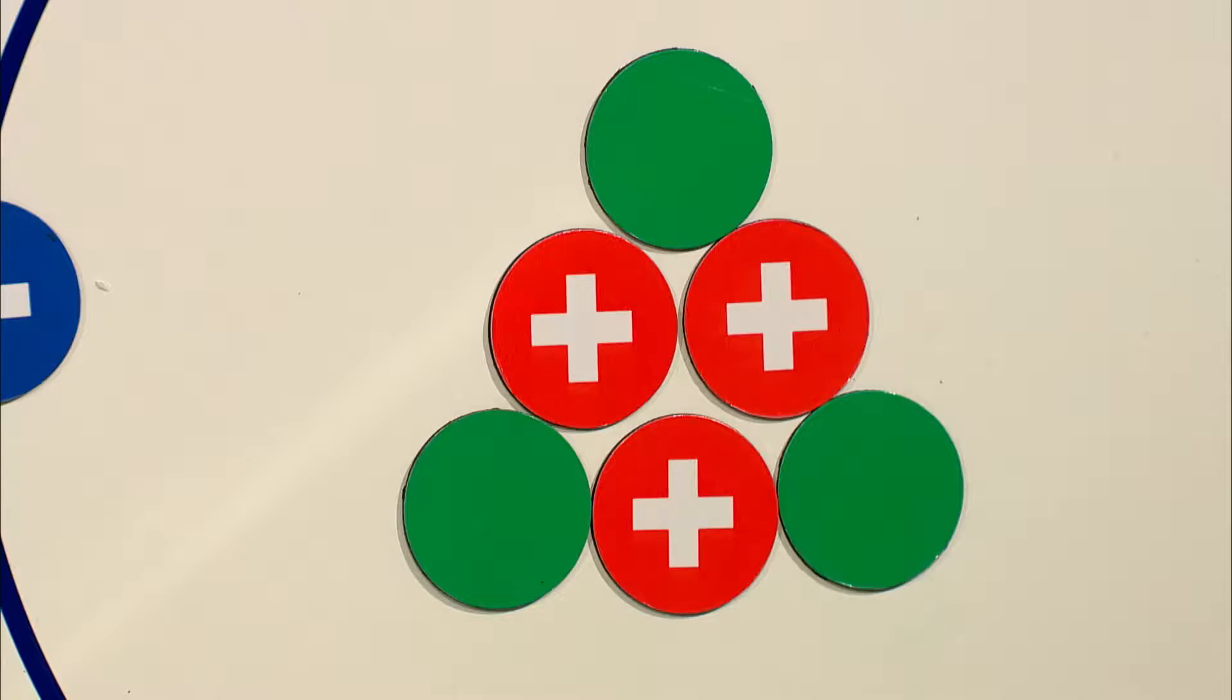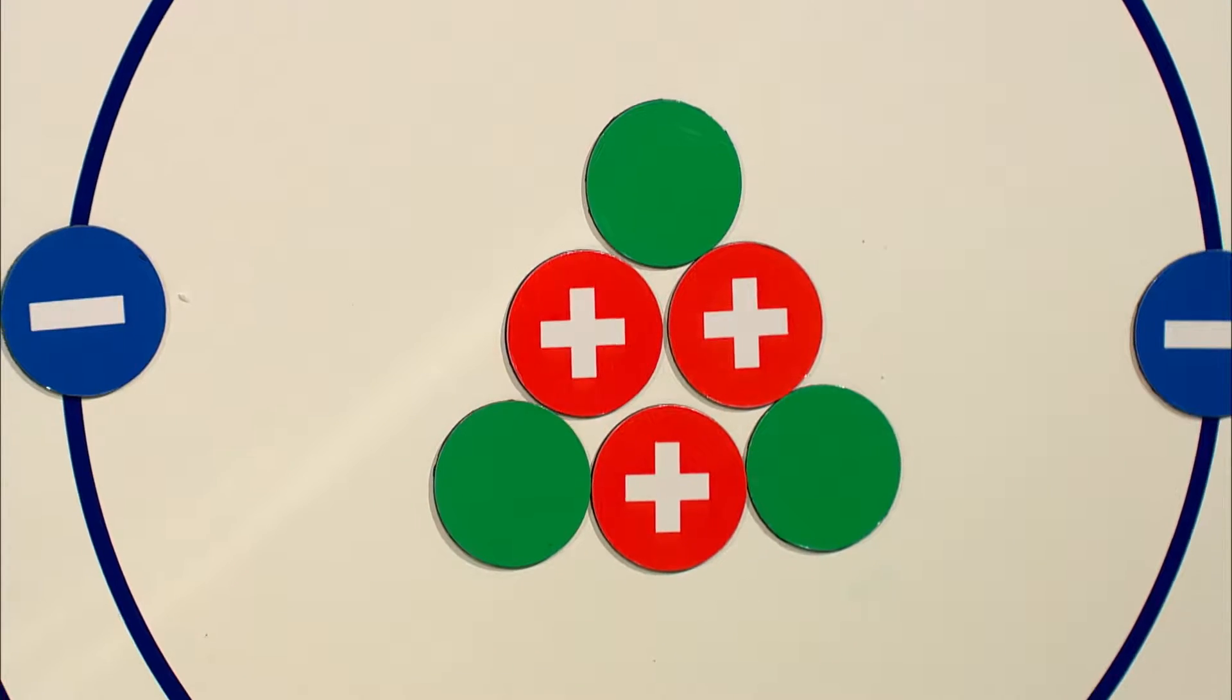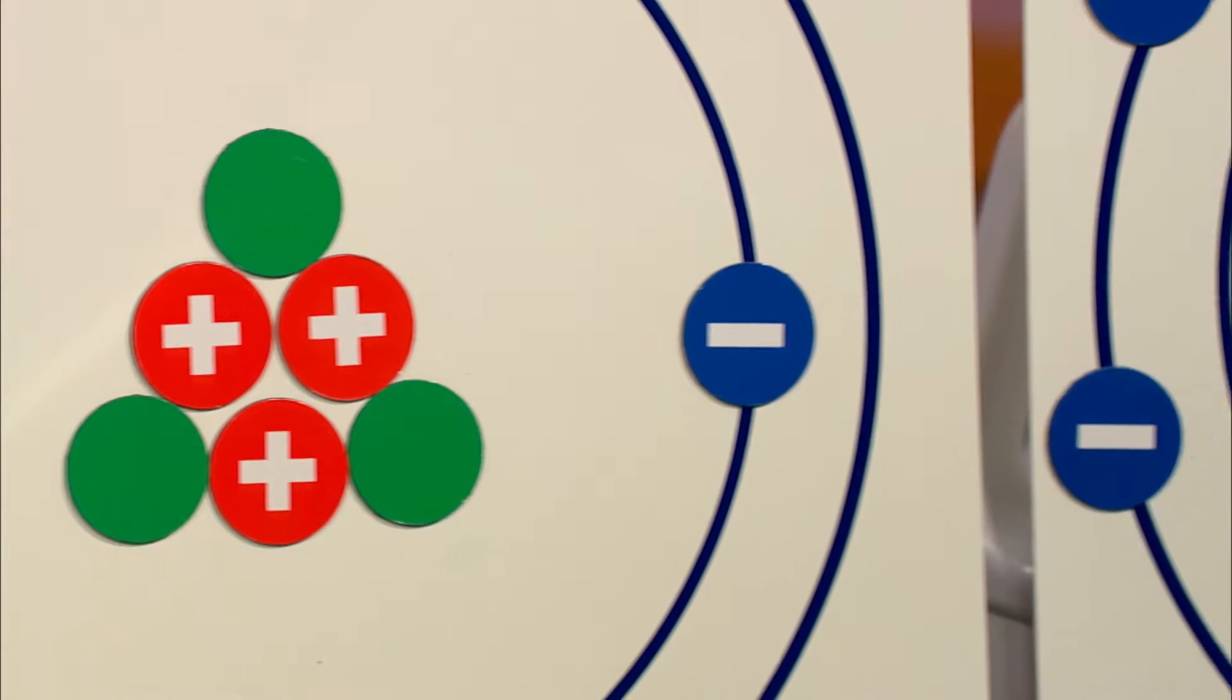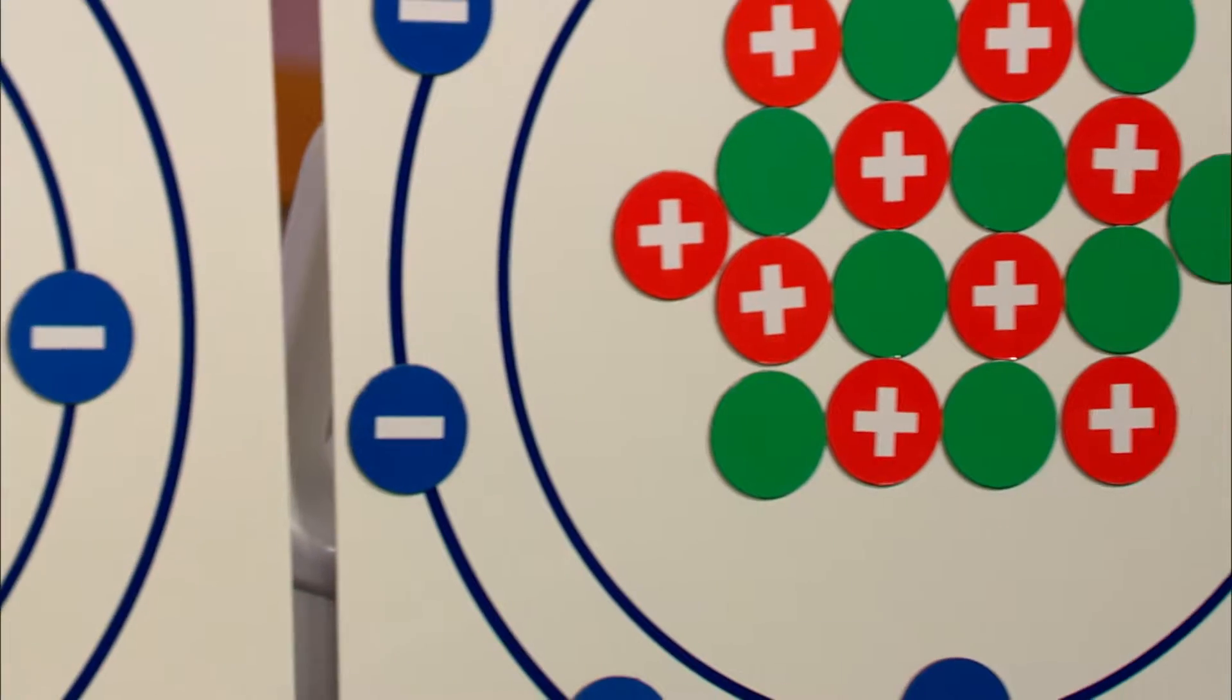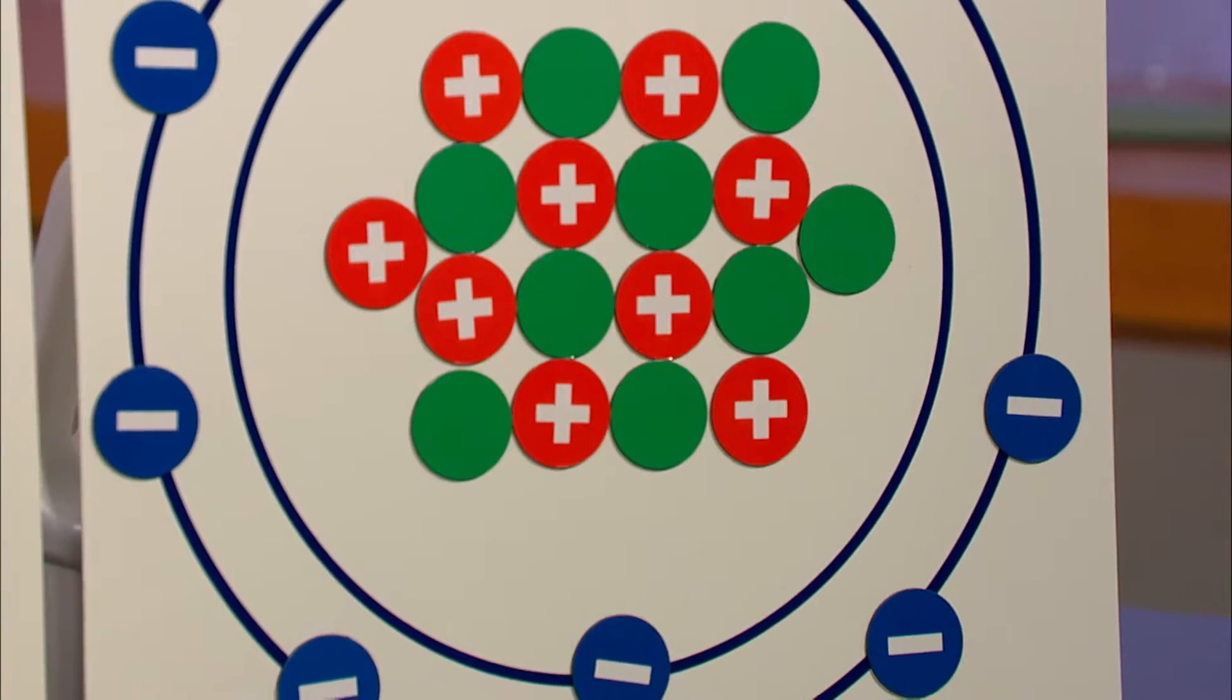For example, why does lithium always form a 1-plus ion, while fluorine forms only a 1-minus ion? The reason lies in how the atoms' electrons are arranged.